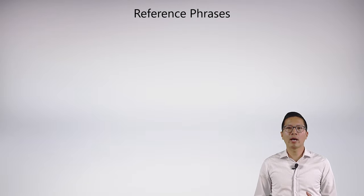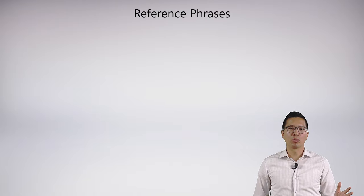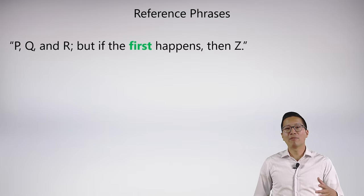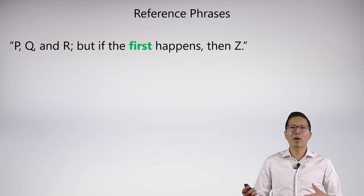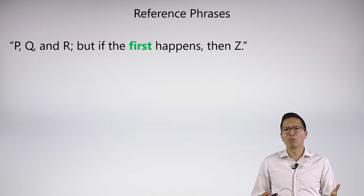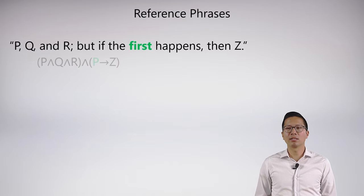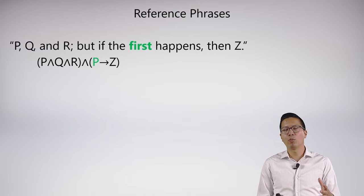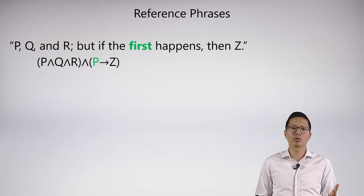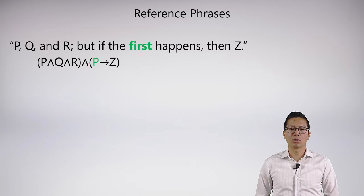The last thing we're going to look at are reference phrases or reference identifiers. Here's a straightforward example. If I say 'P, Q, and R; but if the first happens, then Z' — what do I mean by 'the first'? I hope that's actually just pretty obvious. I listed three possibilities, P, Q, and R, and 'the first' just means the first one. So symbolizing this is pretty straightforward. Notice I have a semicolon, so I know what the main connective is — it's the conjunction. So the first condition is P, that's why I finish with P arrow Z.